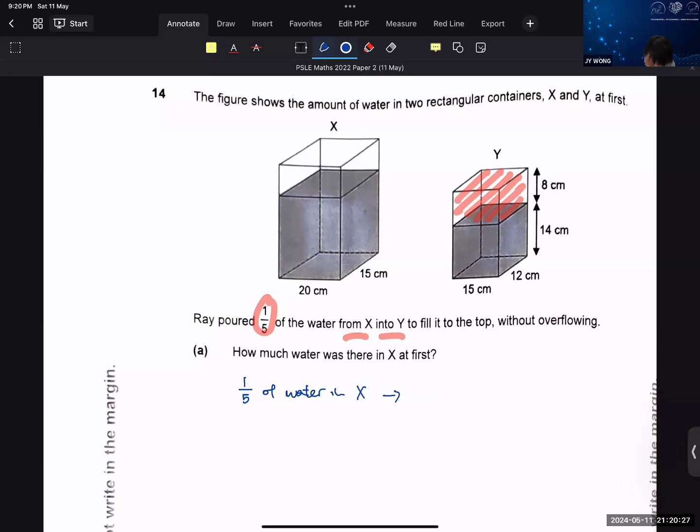We are looking at the empty space, right? So 15 times 12 times 8, which will give me 1440. That is one-fifth of the water in X. And therefore, water in X, you take your 1440 times 5 to give me 7200.